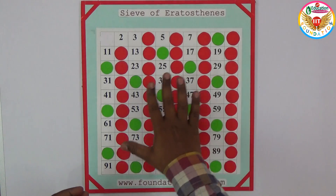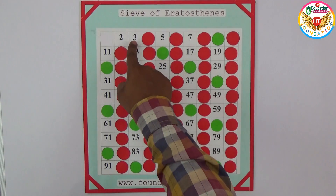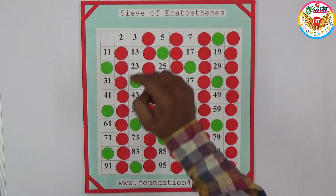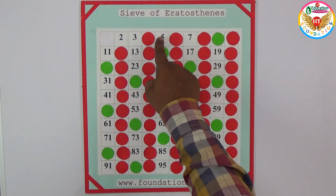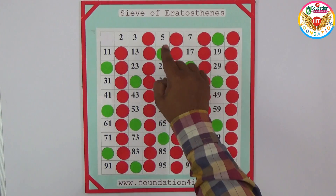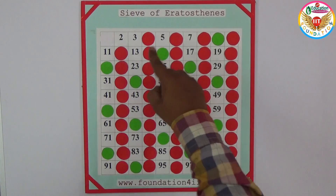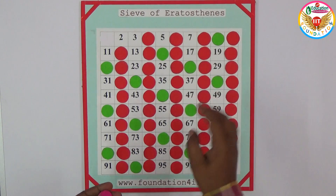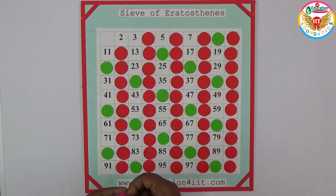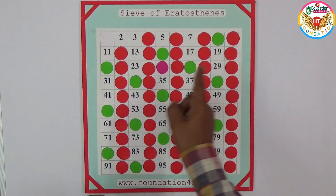Now the numbers shown in green are all multiples of 3, so they are not prime numbers except 3 itself. Now let us see 5. Since 5 is prime, multiples of 5 are not prime numbers. So we cover the multiples of 5: 10, 15, 20, and so on. Those already closed we skip, and remaining ones — 25, 30 — we cover.